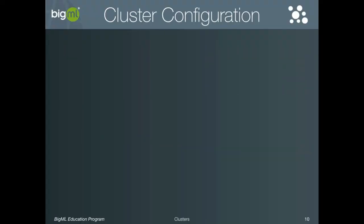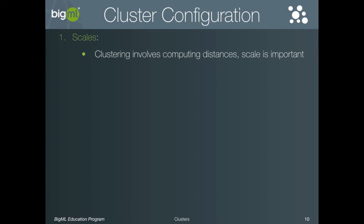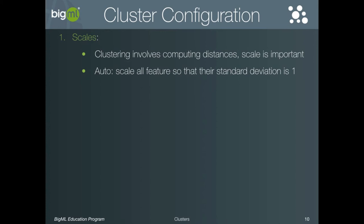Now let's take a look at the advanced configuration features for clusters. The first is the option to configure specific scales for each feature. Because the clustering algorithm computes distances, the scale of each feature will impact the results. For example, imagine a dataset of housing data with features like the number of bedrooms and the sale price. We might expect the range for the number of bedrooms to be from 1 to 5, and the sale price may cover a range into the hundreds of thousands or perhaps even millions. If we cluster these homes without scaling, the sale price will impact the distance calculation much more than the number of bedrooms. This means that the number of bedrooms will be effectively irrelevant compared to the sale price with respect to how the clusters are formed. To compensate for this, scaling can be applied. By default, all features are scaled so that their standard deviation is 1. If you have a specific requirement for scaling, it is possible to set scales per field in the advanced configuration.